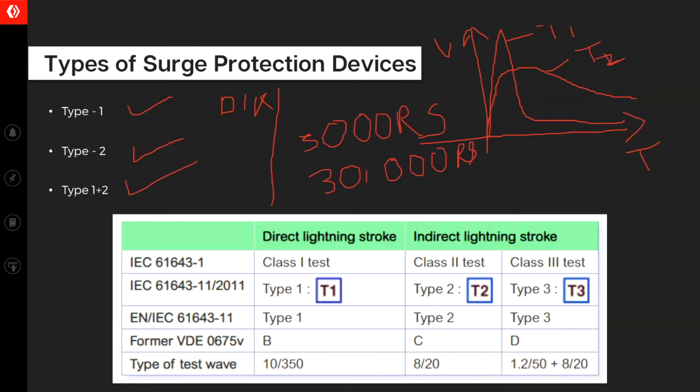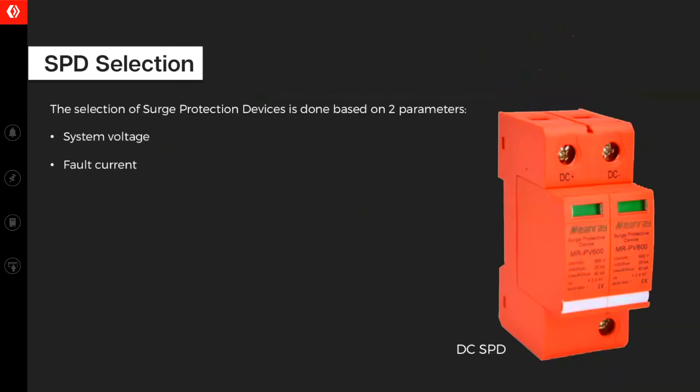This is how your typical DC arrestor looks like. You have a positive connection over here. You have a negative connection over here. And at the bottom, you need to connect your ground or earth.